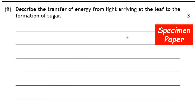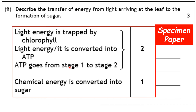Past paper question: describe the transfer of energy from light arriving at the leaf to the formation of sugar (3 marks). Key word is energy. Answer: light energy is trapped by chlorophyll; it is converted into ATP (chemical energy); ATP passes from Stage 1 to Stage 2; the chemical energy in ATP is then converted into sugar. No need to mention hydrogen or carbon dioxide unless you also cover the energy pathway.